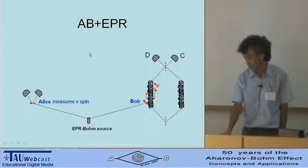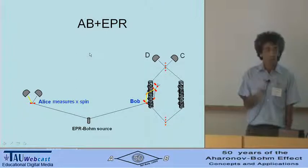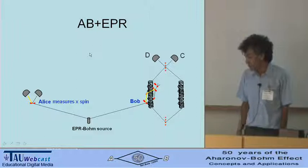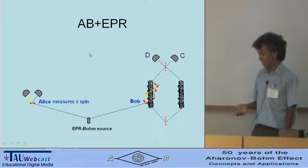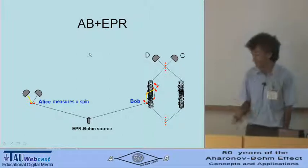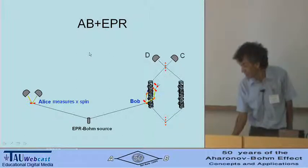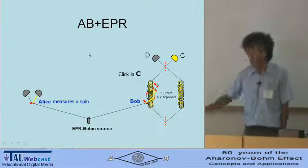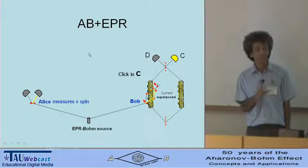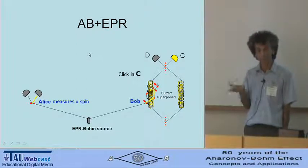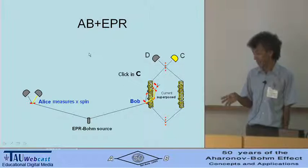Alice may, however, choose to make a measurement in which she has her particle not superposed. And now we understand that Bob's particle is not superposed either. Therefore, it is devoid of the possibility of making, of sensing any AB effect. And then it should leave the superposition intact. And then we are going to see only clicks in C because there is an interference. So what concerns us now is that there is a physical difference between the two cases.